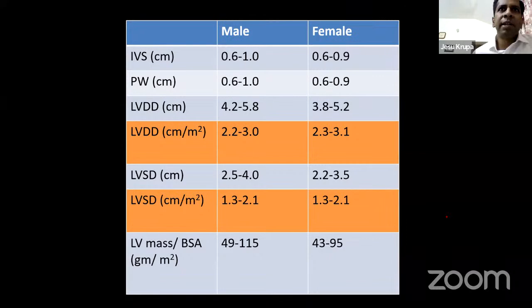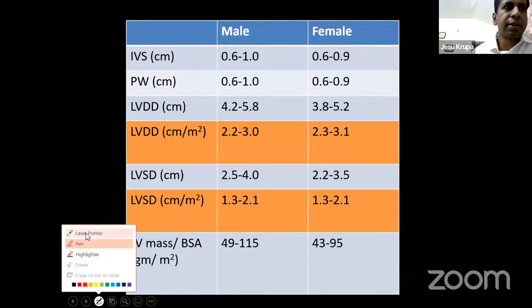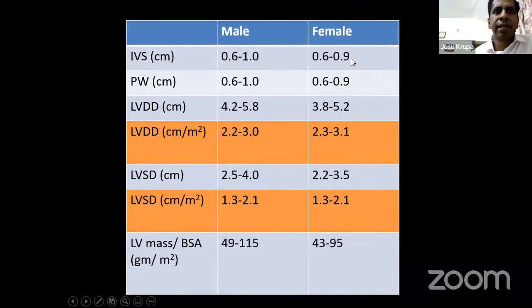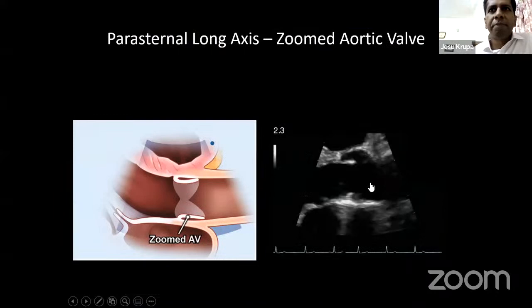There are normal values for these measurements — not for memorization but to know they exist, generated from different populations. Roughly, the interventricular septum in males should be around 10 millimeters, and in females the upper limit is 9 millimeters. We should have an idea about diameters beyond which we would call something dilatation.